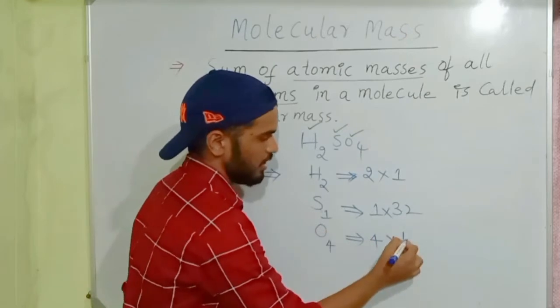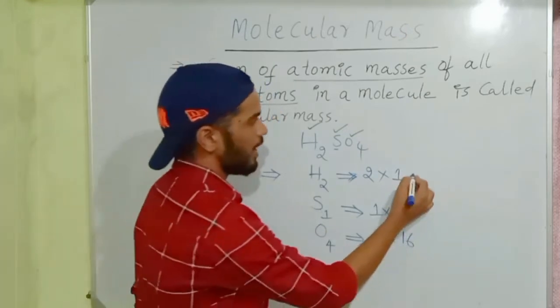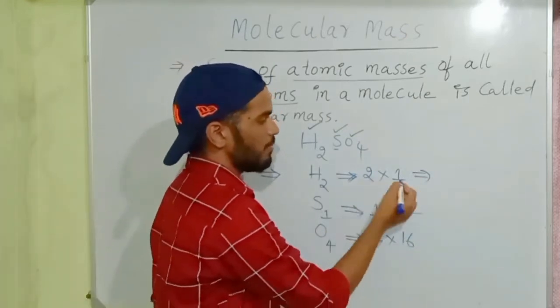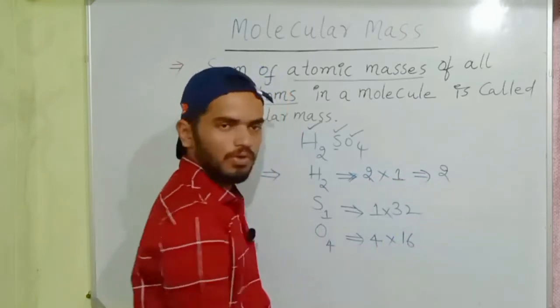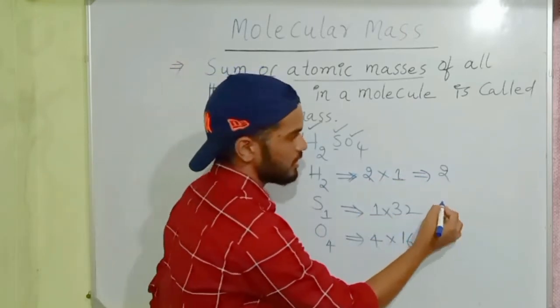So how to add here? Two ones are two multiply here - two ones are two. Next, one into 32 will get 32.